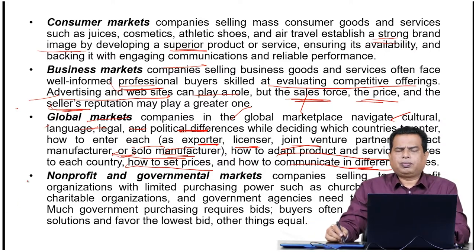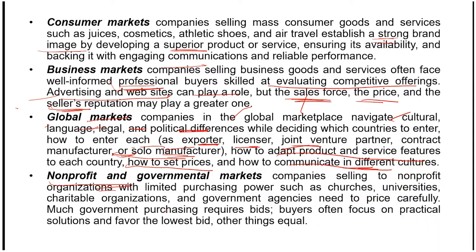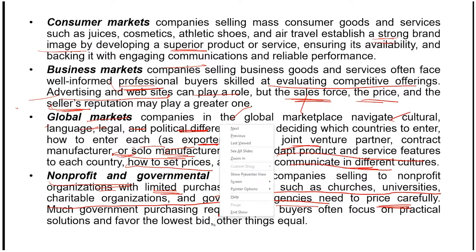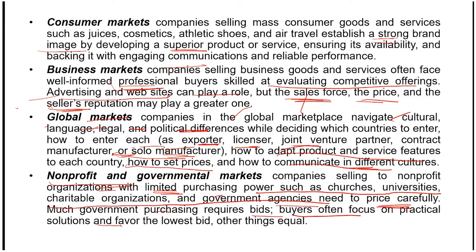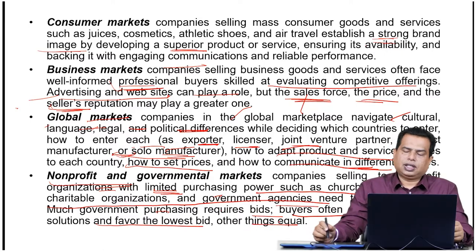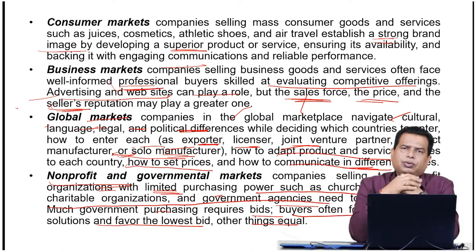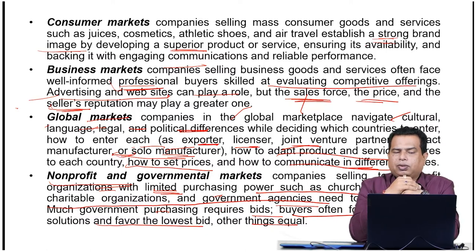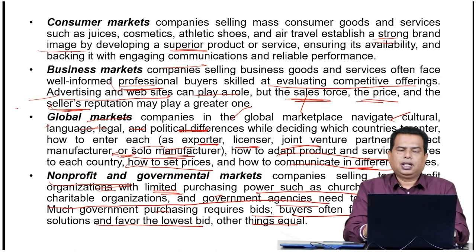Non-profit and government markets involve companies selling to non-profit organizations with limited purchasing power — such as churches, universities, charitable organizations, and government agencies — and they need to price carefully. Government purchasing often requires bids, where buyers focus on practical solutions and favor the lowest bid when other things are equal. Communication about product characteristics is very important for nonprofit and governmental markets, and sometimes credit facilities also need to be provided.